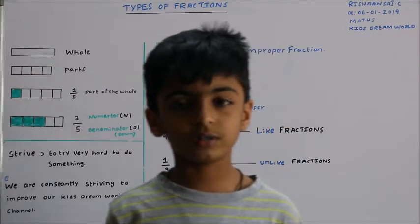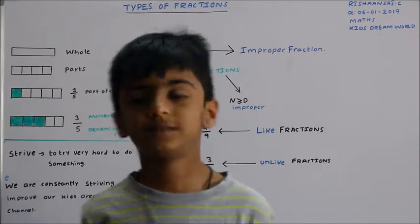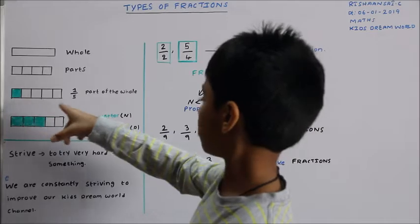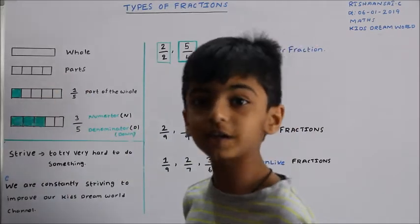Hi everyone, today we will learn about types of fractions. This is a whole, and these are the parts. Now this is 1/5 because there are 5 parts and one is shaded.